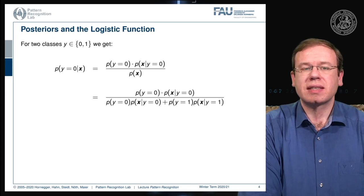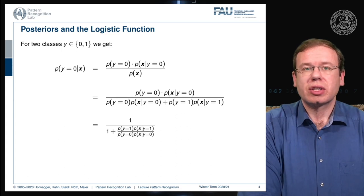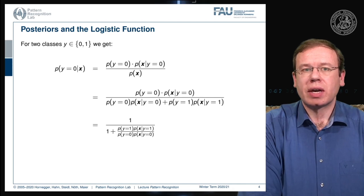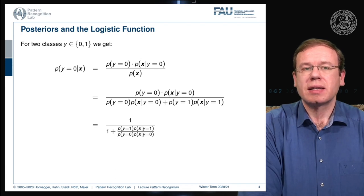We rearrange by dividing the whole fraction by P(Y=0) times P(X|Y=0). This yields a double fraction where we can see the class conditional probabilities and the priors all appearing in the denominator.